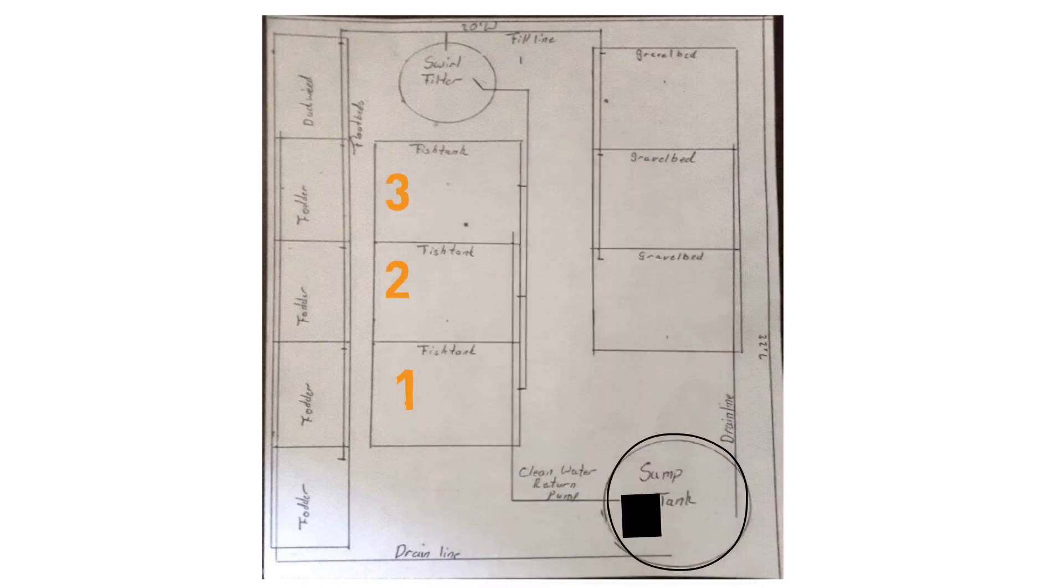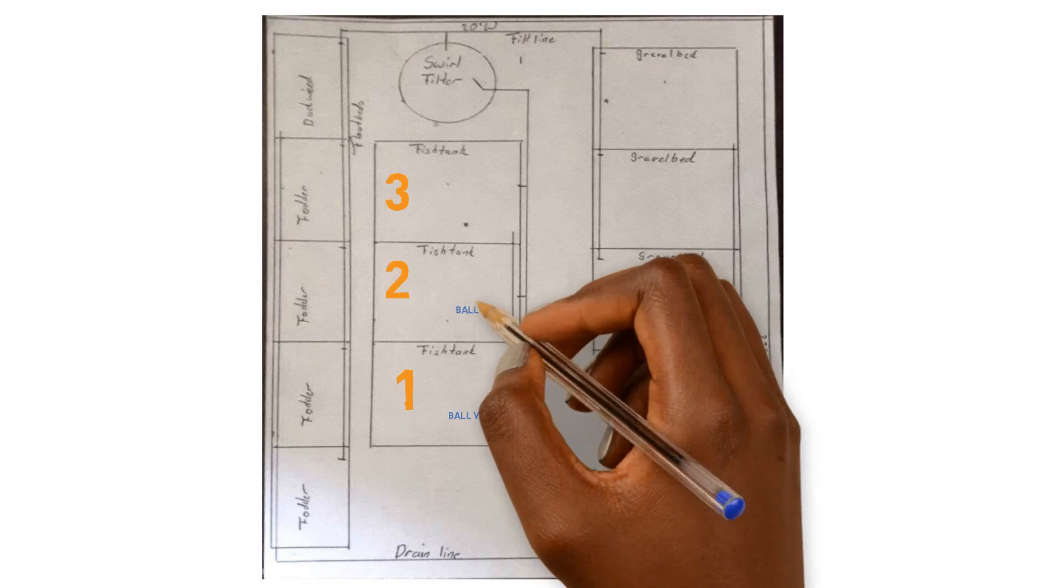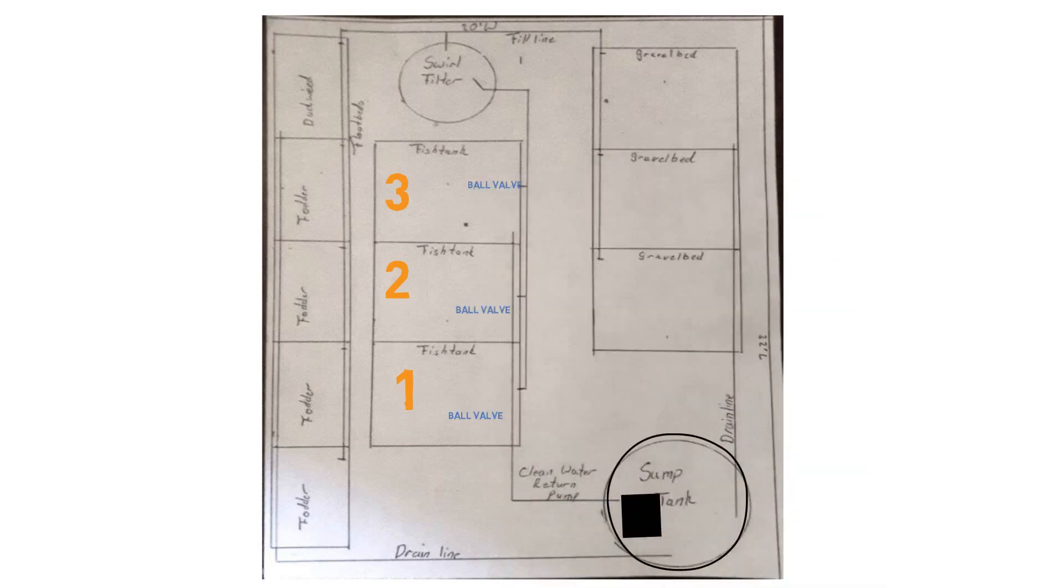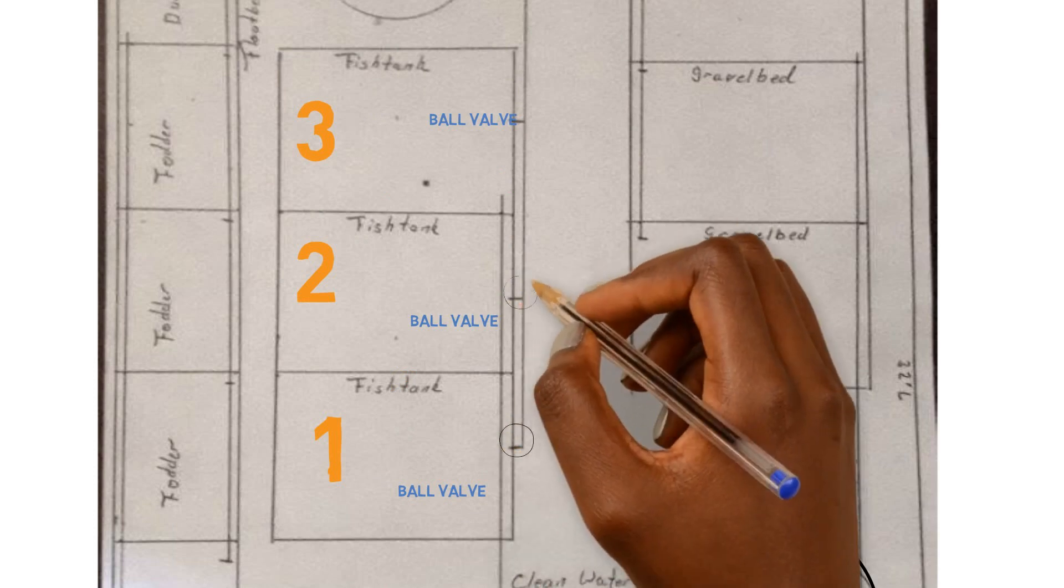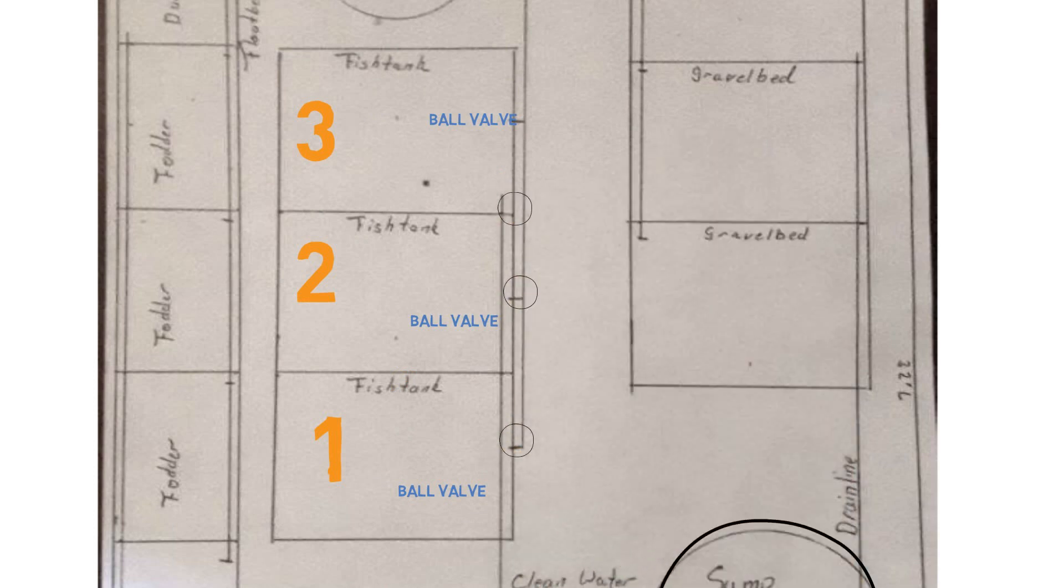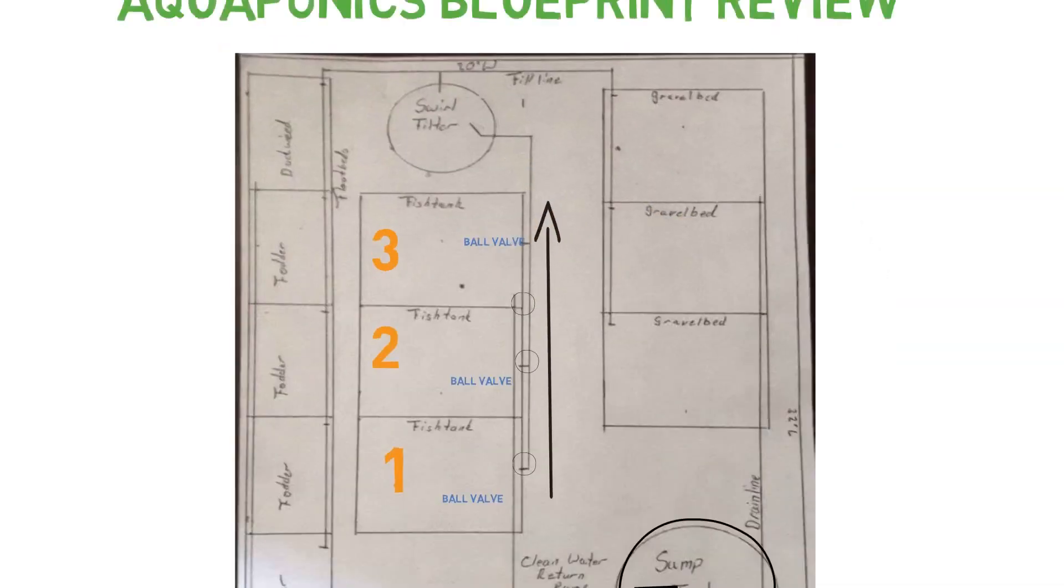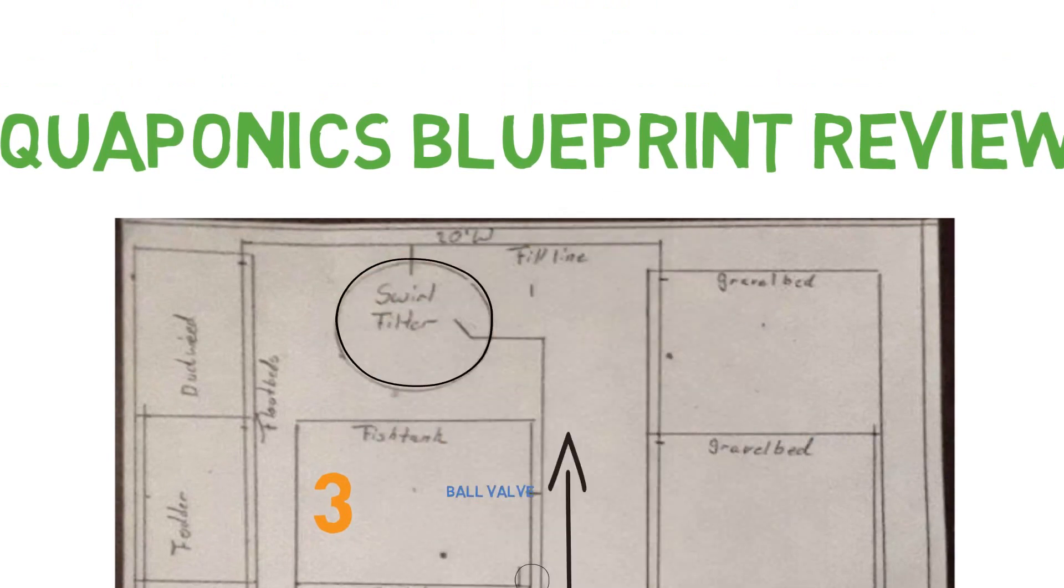In each one of these fish tanks, I'm going to assume that you have ball valves on each one so you can control the flow for each of the tanks. And each one of the tanks is going to gravity feed back into a drain, which is going to then come down to a swirl filter that's going to be slightly lower than the outlet of these fish tanks. And then it's going to connect to the swirl filter.